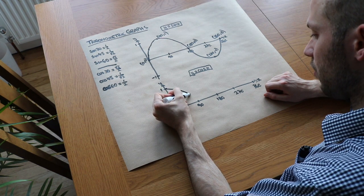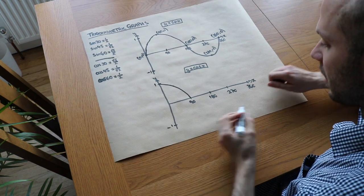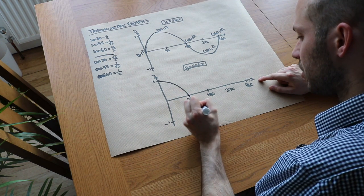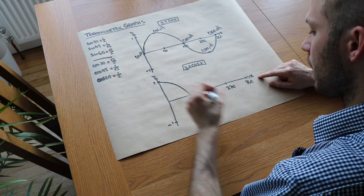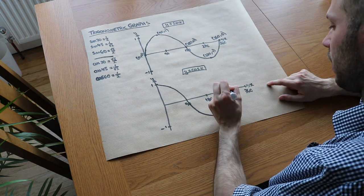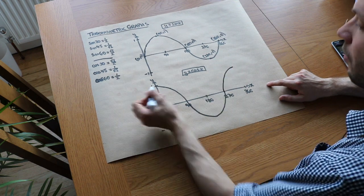And then basically, you can sort of see what the shape is going to do. If I follow these points, it drops down to 90. Then, by 180, it drops down to minus 1, and then it comes back up to 0 again by 270, and then another 90 along, it goes back up to 1 again, and again it repeats.